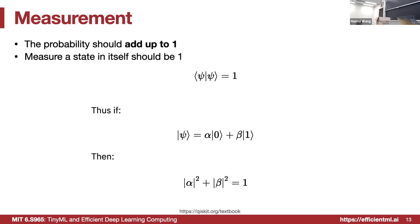The probabilities of measuring zero or one must add up to one. If we measure a state in itself, the result must be 100%, i.e., the dot product of the state with itself equals one. This gives us the normalization constraint: |alpha|² + |beta|² = 1. This is one constraint on the complex number values, and we will use this to reduce from complex numbers to real numbers to describe the single-qubit system.